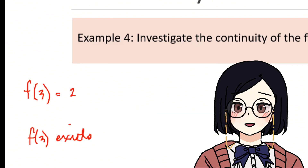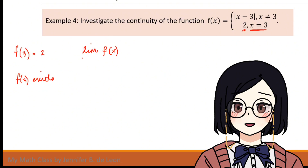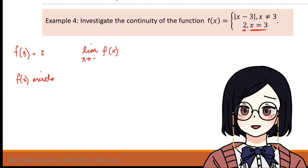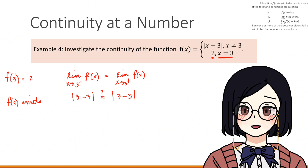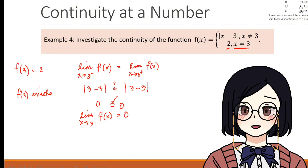We now investigate whether the limit of the given function exists by showing the limit of f(x) as x approaches 3 from the left equals the limit of f(x) as x approaches 3 from the right. Evaluating the limits, we get |3 - 3| = |3 - 3|, simplifying both sides to 0 = 0. Therefore, the limit of f(x) as x approaches 3 is 0.